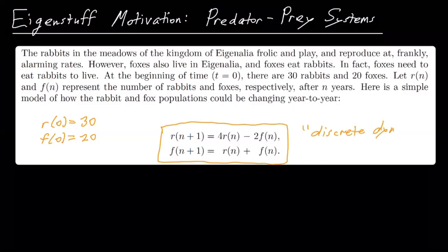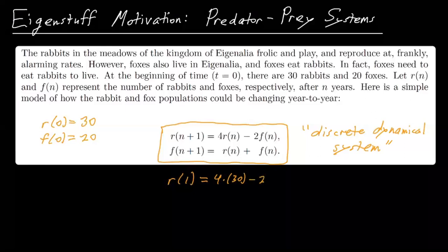Basically, if we know the number of rabbits and foxes at year n, we can find the number of rabbits and foxes at year n plus 1. Right? So for example, r(1) is 4 times r(0), which is 30, minus 2 times f(0), which is 20. So that's 120 minus 40 is 80. And f(1), so the number of foxes after one year is number of rabbits plus the number of foxes is 50.